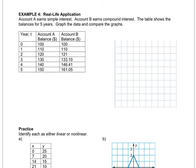Last one together, then you'll do a few on your own. Account A earns simple interest and account B earns compound interest. In order to solve this question, you don't need to know the difference between simple and compound interest. I'll explain it when you come to class. It's a different way of calculating the interest on an account. The table shows the balance after five years. Graph the data and compare the graphs.